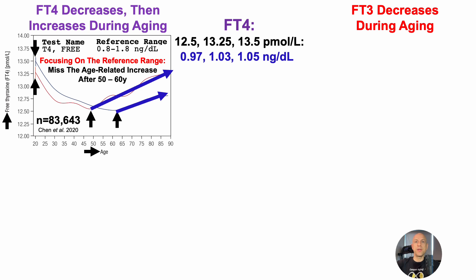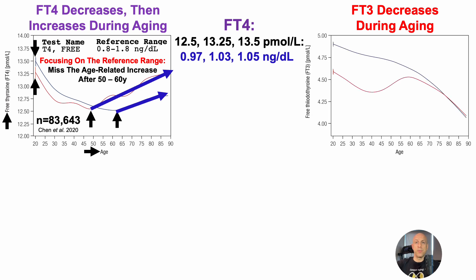What about free T3? It decreases during aging with data that's more continuous relative to the data for free T4. In youth, average values for women are about 4.6 picomolar and for men about 4.9. Values in 90-year-olds are close to about 4.1 picomolar. The decline is pretty continuous for men, whereas for women it's biphasic — it goes down, then up, then down again.